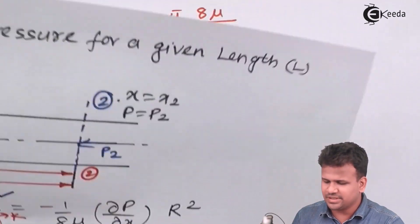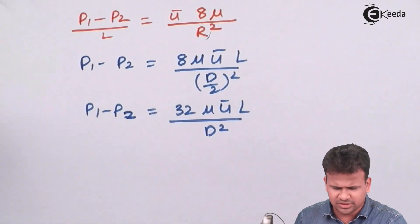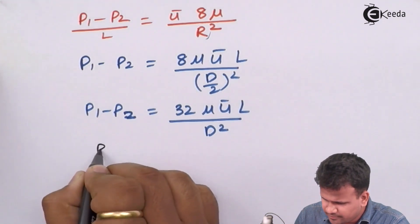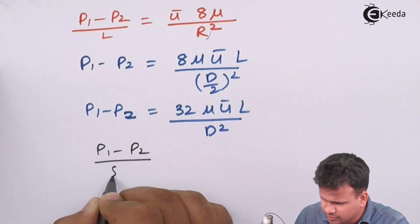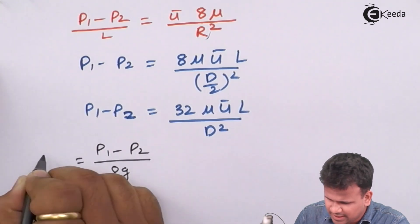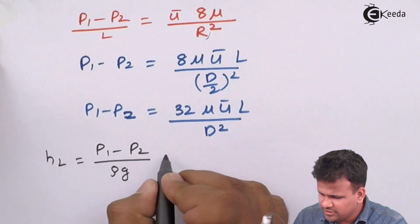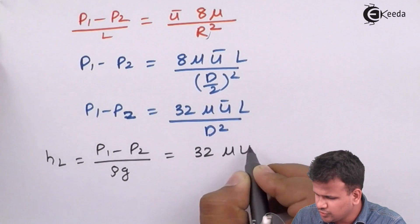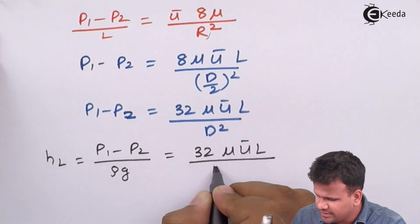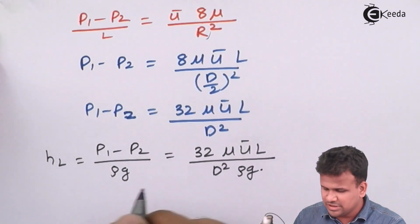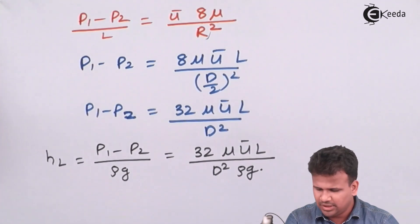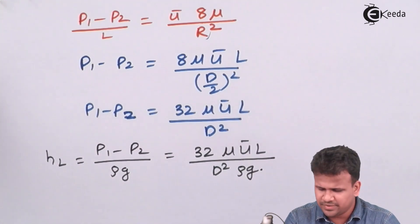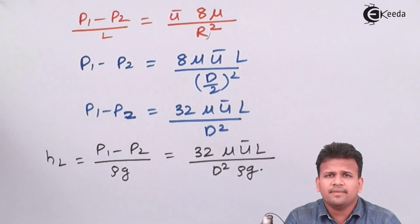Now let us study this further in terms of head loss. Head loss is defined as (p1 minus p2) divided by ρg. This is called the head loss due to pressure. So the head loss due to pressure is given as 32μ ū L / (D² × ρ × g).